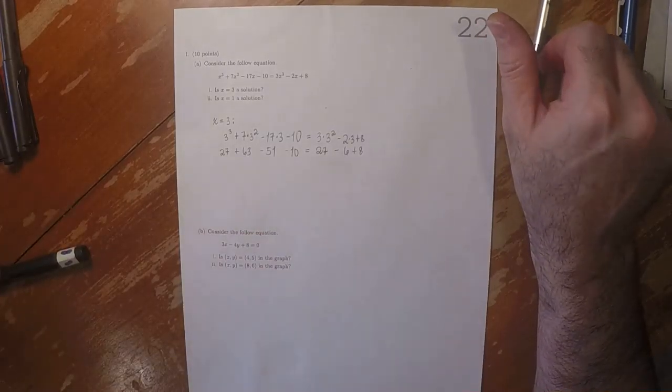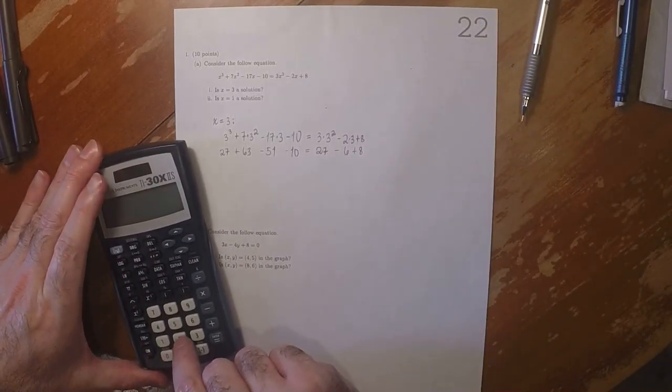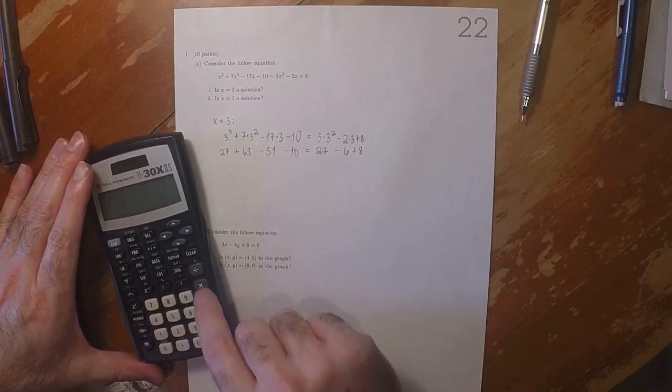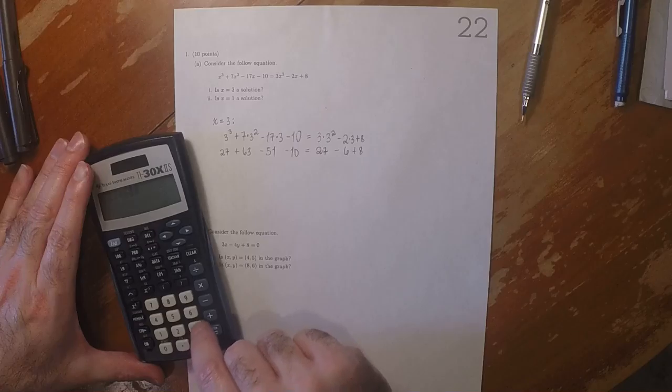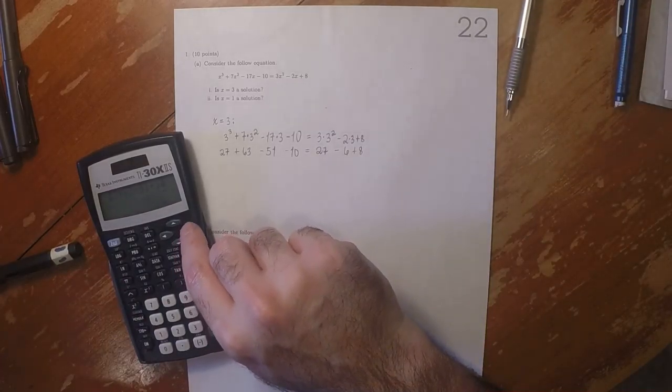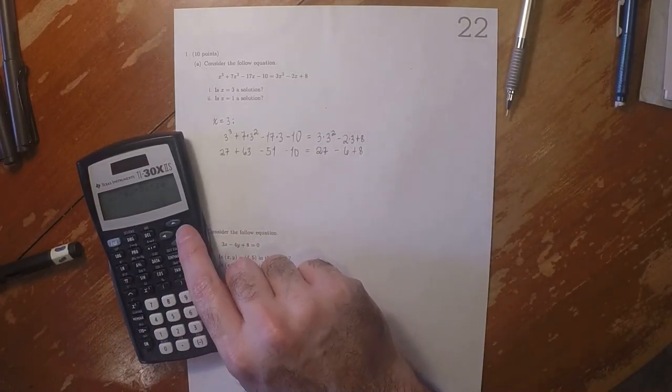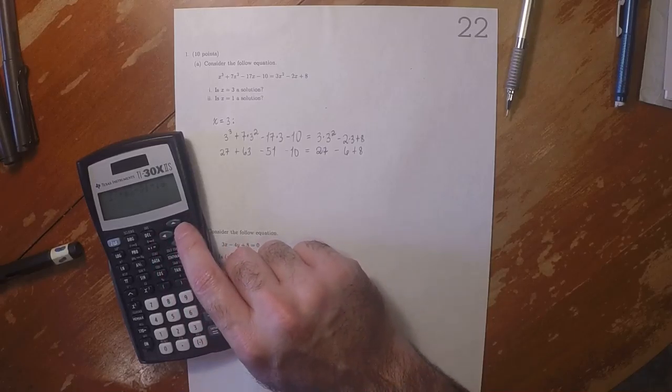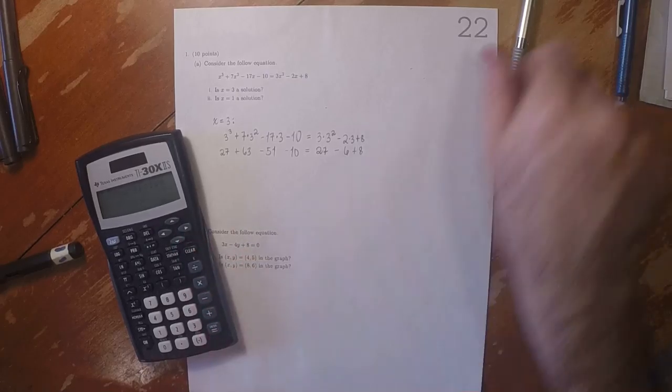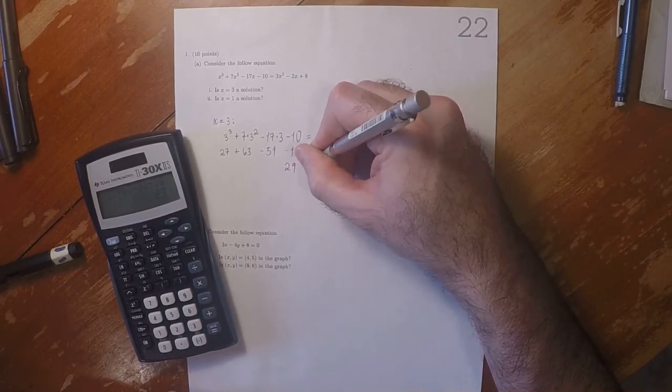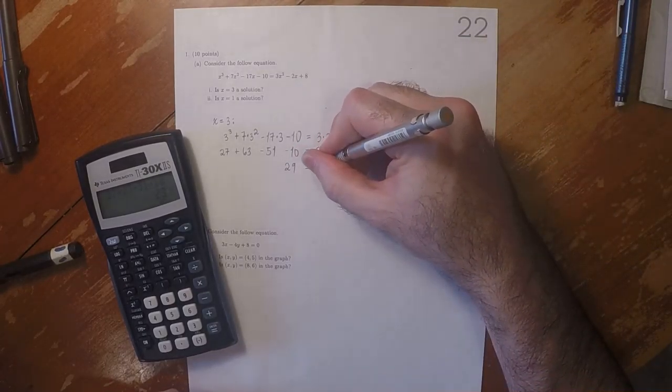So we can use a calculator for this. This is 27 plus 63 minus 51 minus 10. The left-hand side, no, 27 plus 63 minus 51 minus 10 is 29. And the right-hand side is also 29.